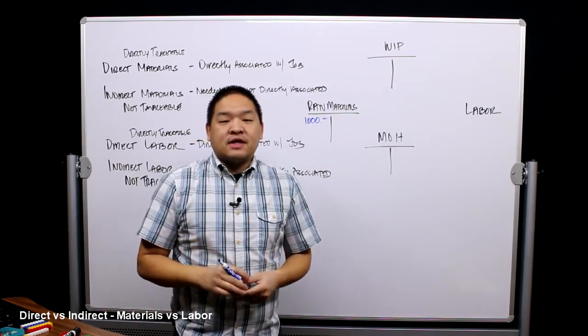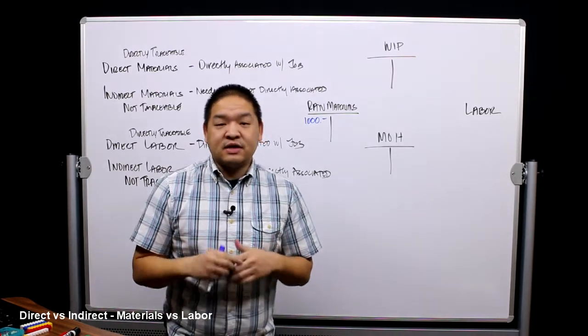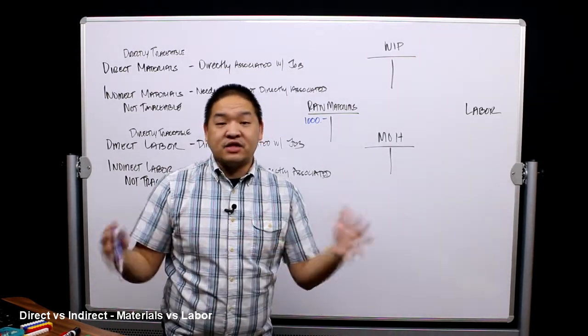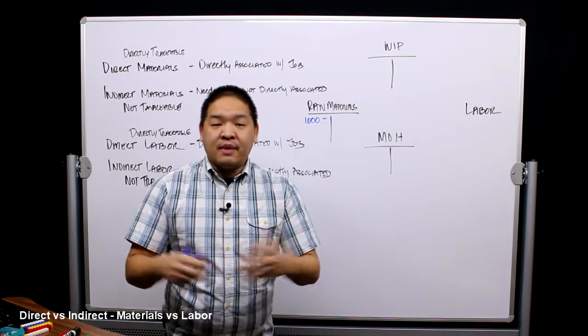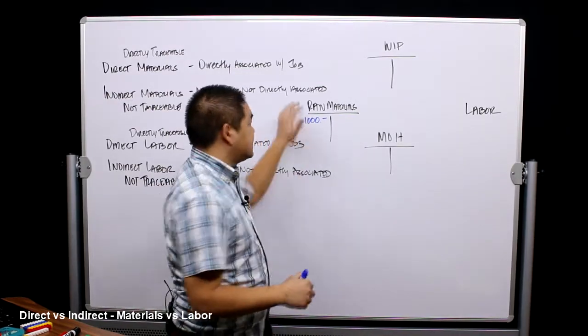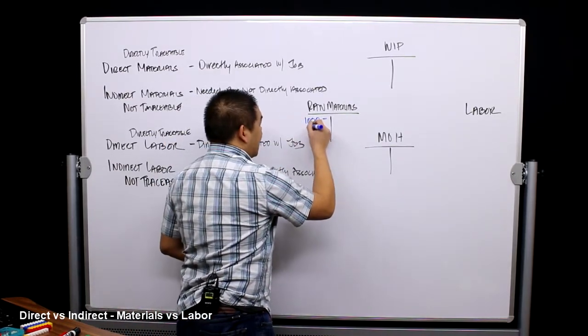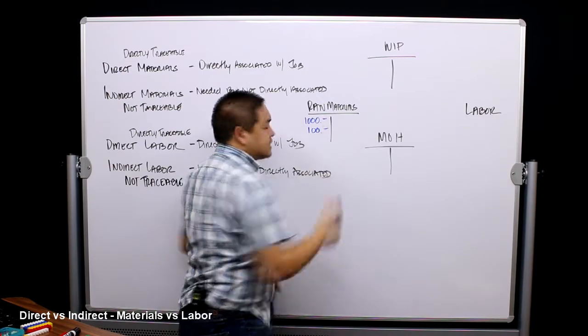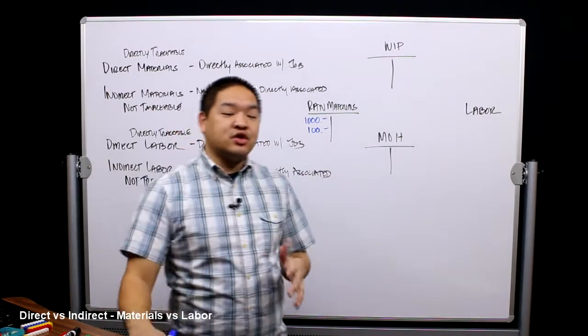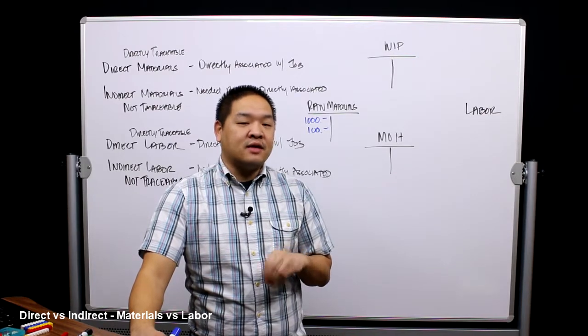I debit raw materials inventory for a thousand dollars, credit accounts payable because I'm going to pay them in 30 days. So raw materials goes up by a thousand dollars. Now let's say I also at the same time buy a hundred dollars worth of towels. These towels I use to clean my hands so I'm not getting everything dirty. They are raw materials. We didn't say this was a direct material account, so I might put in raw materials a hundred dollars worth of towels. So how much raw materials do I have? I have a hundred dollars of towels and a thousand dollars of oil.